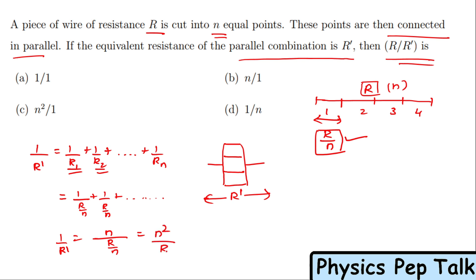So 1/R' = n/(R/n) = n²/R. They're asking for R/R'. Cross multiply: R/R' = n². So n² by 1 equals n². Option C is the right answer for this question.